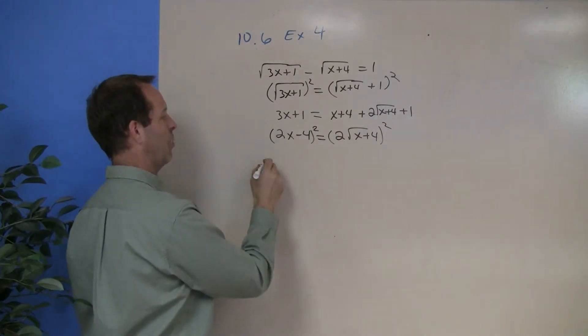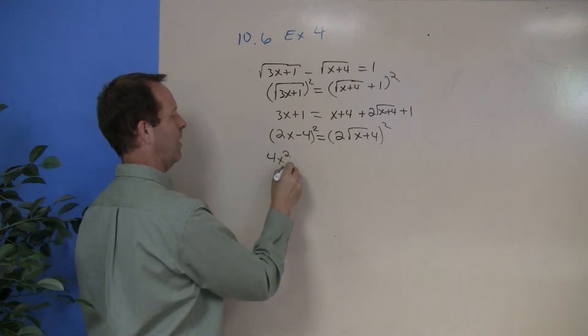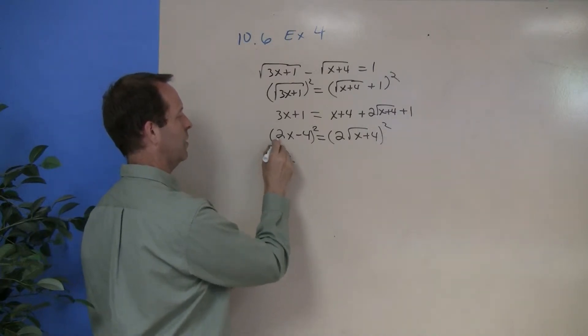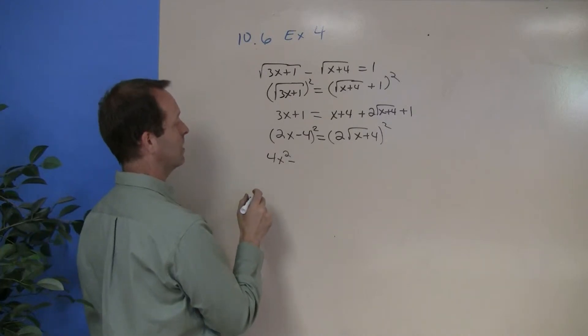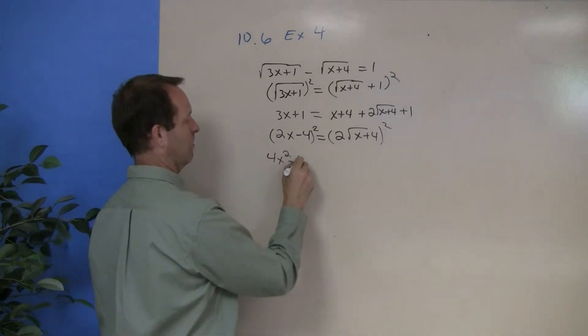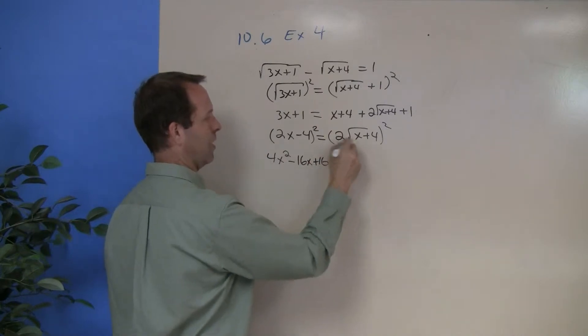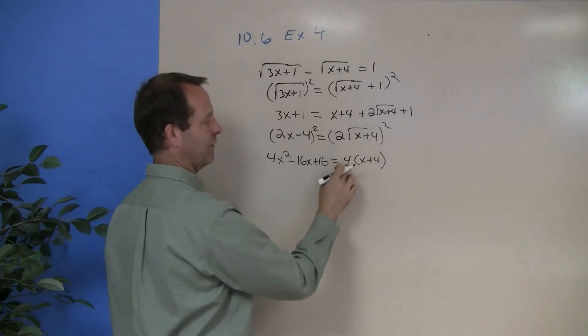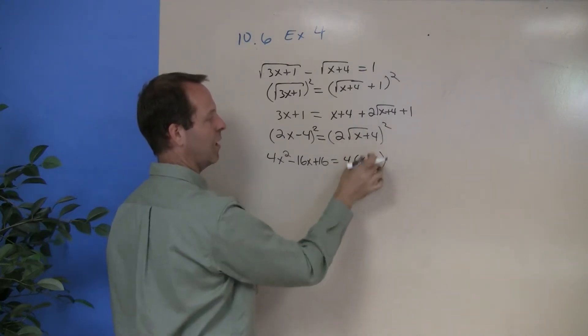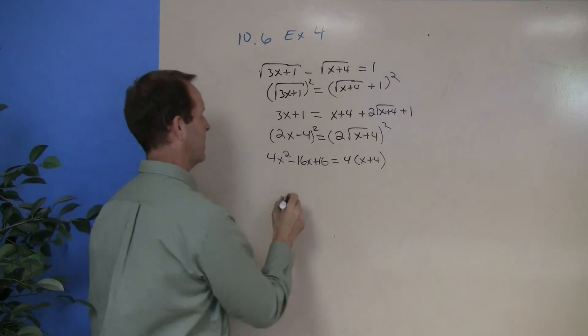So let me clean it up. This gives me 4x squared minus 16x plus 16 equals this side squared, which is 4x plus 4. 2 squared, root x plus 4 squared, just x plus 4. All right, let's clean it up a little bit.